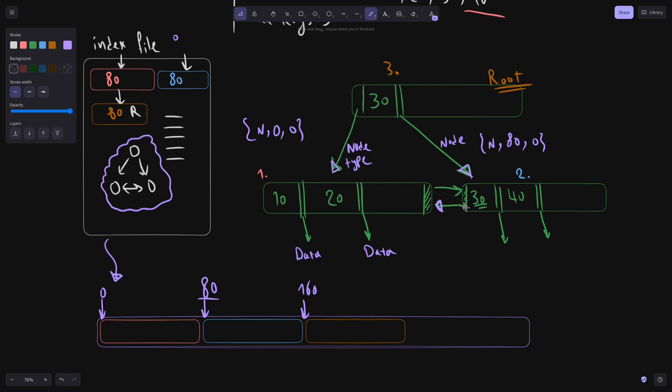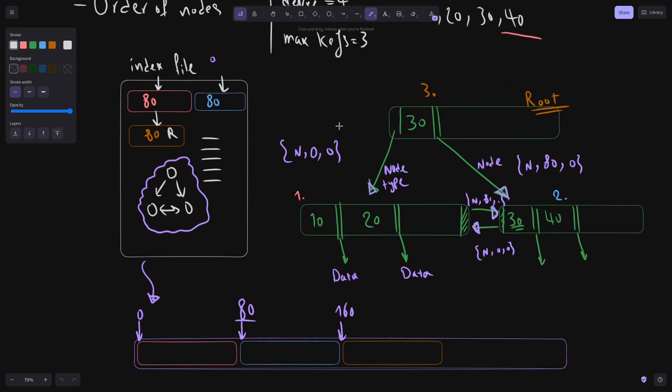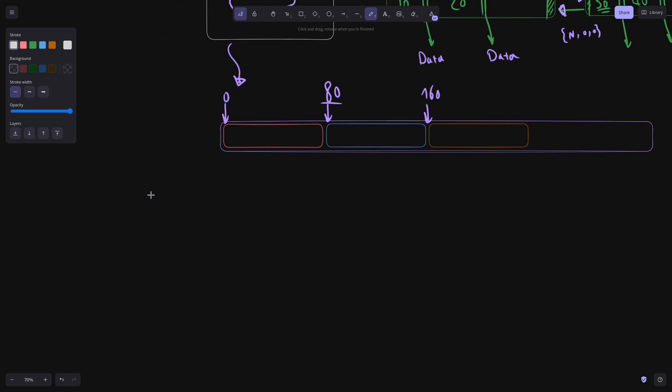The next pointer which points to the second leaf node has type node. The position is 80. And the chunk is 0. Same thing happens for these pointers. The pointer from the second node to the first node has type node, chunk 0 and position 0. And this other one has type node, position 80 and chunk 0. Now back to our problem from earlier. We said that we lose the position of the root. Any of these nodes could become root at any point. So we need a mechanism to track the root node.